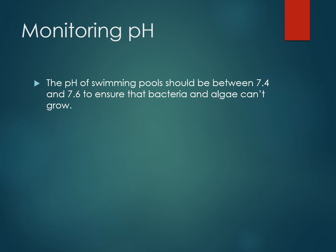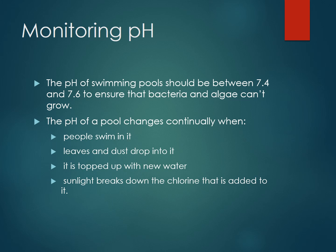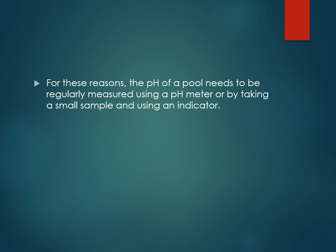Monitoring pH: swimming pool pH is really important to monitor — it should be between 7.4 and 7.6, partly because bacteria and algae can't grow in it, keeping the water healthy. The pool's pH changes continually when people swim in it, dust drops in, new water is added, or the sun breaks down the chlorine. So the pool needs to be measured using pH and chemicals added to keep the pH correct.